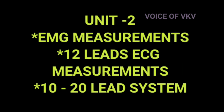In the second unit, there are 3 important questions. First is EMG measurement. Second is 12-lead ECG measurement system. Third is EEG measurement system, that is the 10-20 electrode system in detail. You have 3 questions to cover in the second unit, and you can find one question relatively easy.